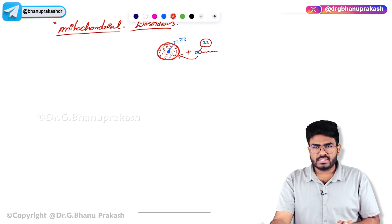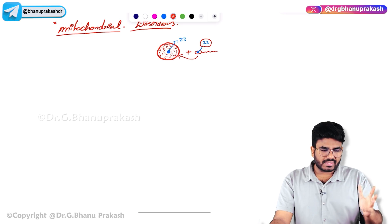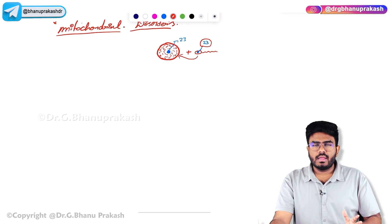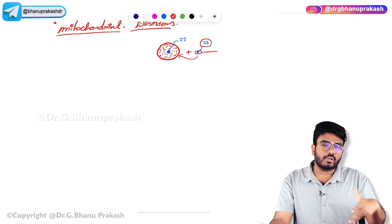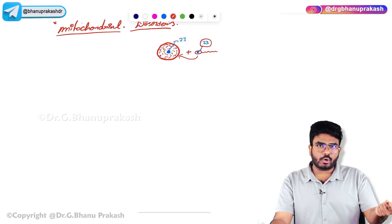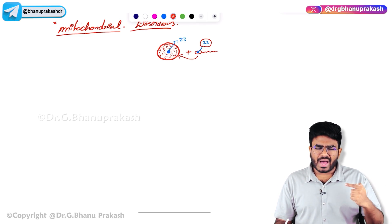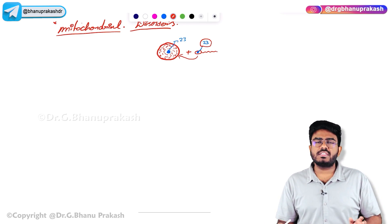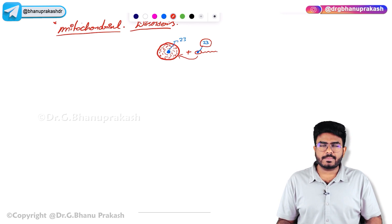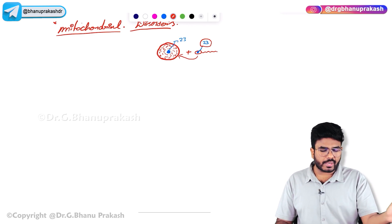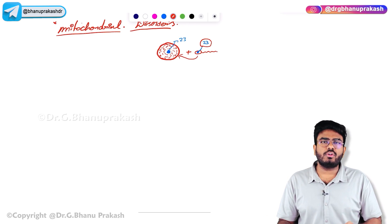If there is any mutation in the mitochondrial genes and a mother has a mitochondrial disorder, she donates the mitochondria to all offspring, so all offspring will be affected. But if a father has a mitochondrial disorder, he cannot pass it to the offspring because he does not donate any mitochondria. Affected mothers spread the disease to all offspring; affected fathers do not spread the disease to any offspring.